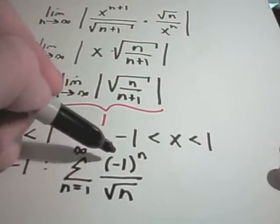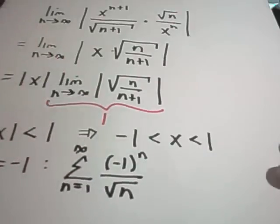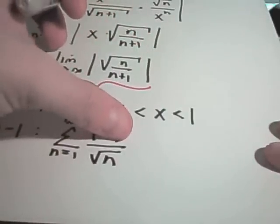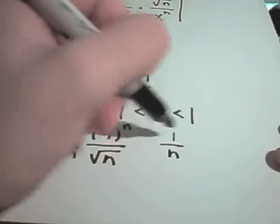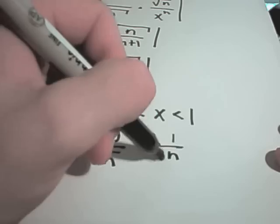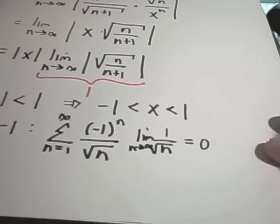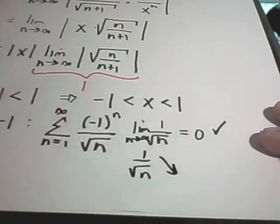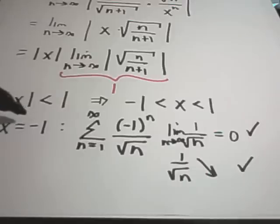With negative 1 to the n, this is an alternating series. For an alternating series, we have to show that the remaining part — 1 over square root of n — has a limit of 0 as n goes to infinity, which it certainly does. We also have to show that 1 over square root of n decreases, which it absolutely does. So this series converges for x equals negative 1.